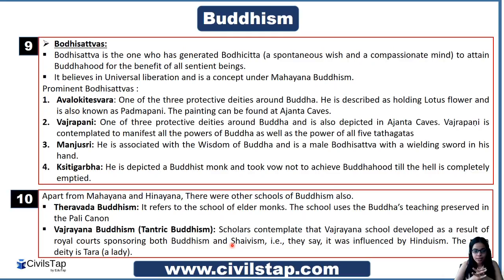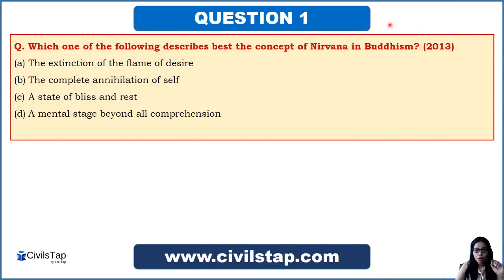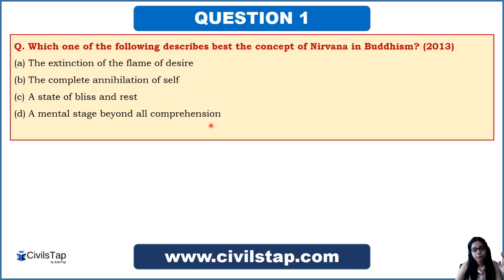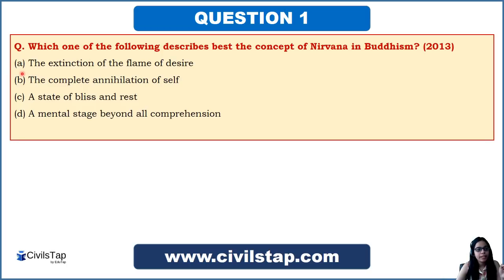Now we will see questions from previous years based on this information. This question came in the UPSC Prelims of 2013: 'Which one of the following best describes the concept of Nirvana in Buddhism?' Options: (A) the extinction of the flame of desire, (B) complete annihilation of self, (C) a state of bliss and rest, (D) a mental stage beyond all comprehension. Since Nirvana is the state where desire is extinguished — and desire is the cause of sorrow — the correct answer is option A: the extinction of the flame of desire.